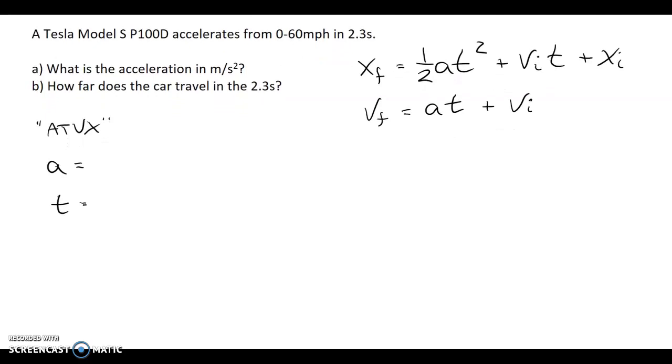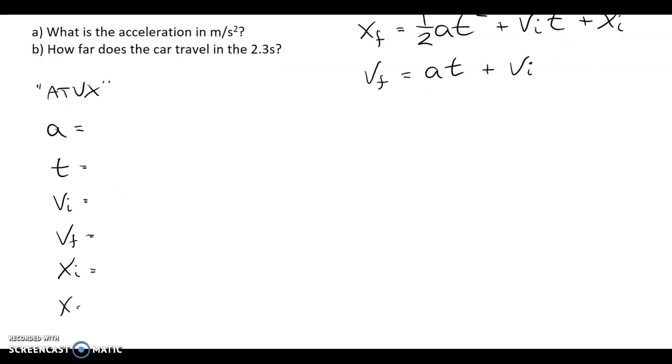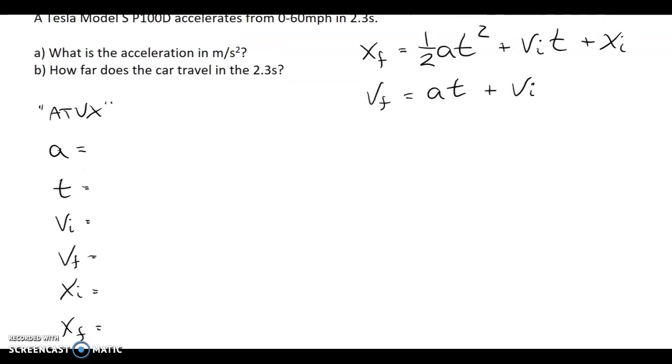Velocity is potentially changing, so we would have an initial velocity and a final velocity. And the position is also changing. So we might start somewhere, an initial position, and we might finish somewhere, a final position.